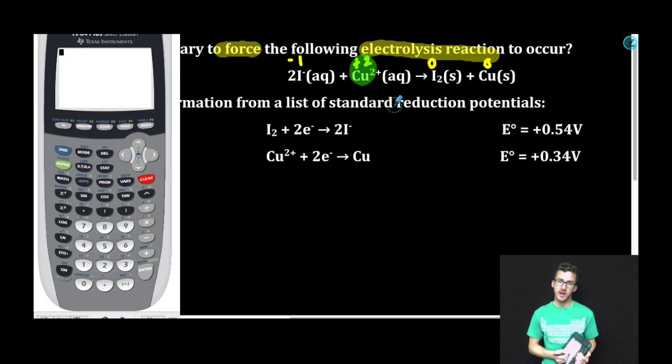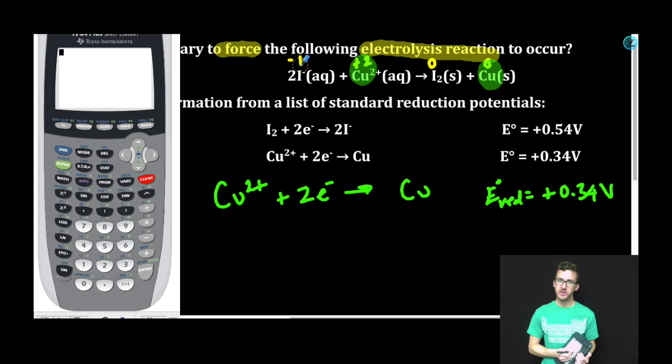Notice that the copper 2 ion goes from plus 2 to 0. It is being reduced. So I'm going to rewrite its half reaction exactly as I see it, and its reduction potential exactly as it appears. Now let's take a look at the iodide ion going from the minus 1 oxidation state to the 0 oxidation state.